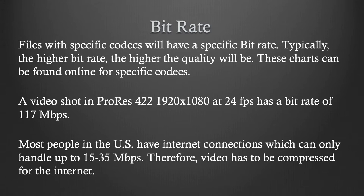The need for compression: most people in the U.S. have internet connections which can only handle up to 15 to 35 megabits per second. You have to compress the footage so your video can play back online. If you're trying to stream ProRes 422 at 117 megabits per second, it's just not going to happen on most people's internet connections. So that's one reason we have compression — so videos can be played and watched online.